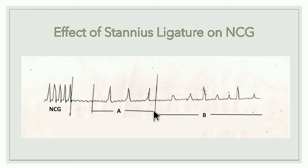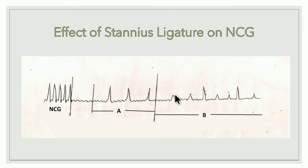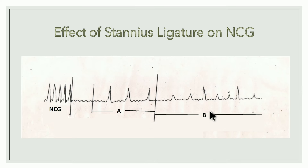When the second ligature is applied between the atria and ventricle, the sinus contracts by itself, the atria contract by themselves, and the ventricles also contract by themselves — but the ventricular rate is much slower than the atrial rate. This is idioventricular rhythm. So after the first ligature: sinus rhythm and atrioventricular rhythm. After the second ligature: idioventricular rhythm. A is atrioventricular rhythm and B is idioventricular rhythm.